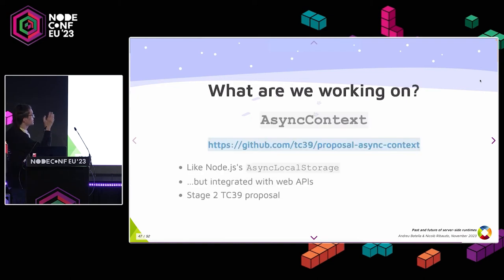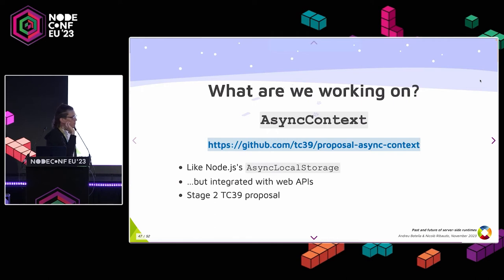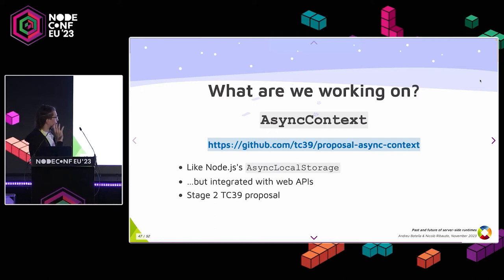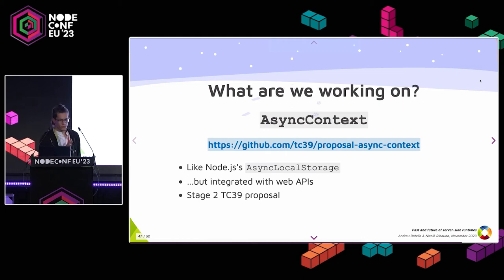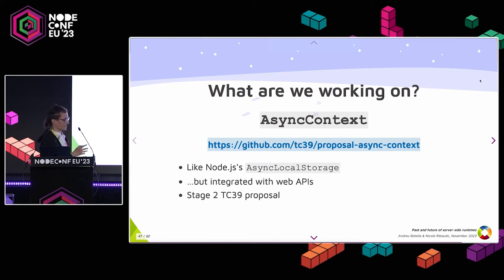We have async context — this is basically like Node.js's async local storage but integrated with web APIs. We're running this as a stage-two TC39 proposal. If you want to know more about async local storage, Steven Ballinger talked about this on Monday. And Dan Ehrenberg will be talking about async context and why it can't be polyfilled in userland later today.